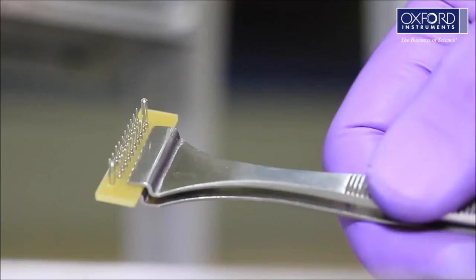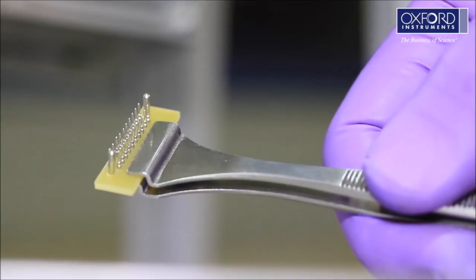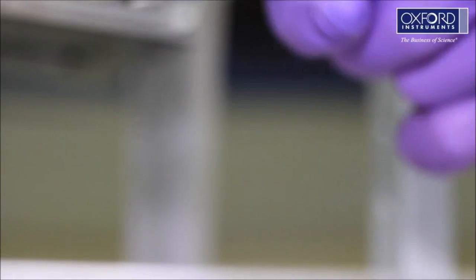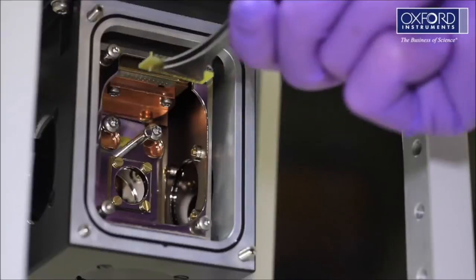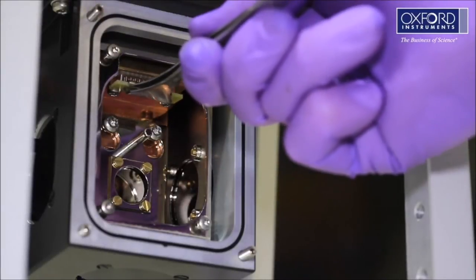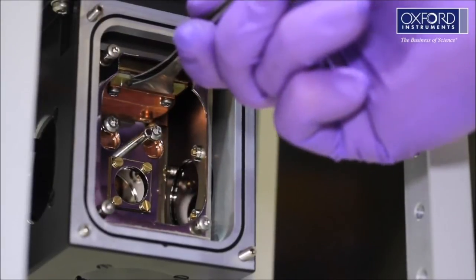If you have chosen this, you will be supplied this mating connector. Make the electrical connections between your sample and this connector. Then insert it into the mating connector near the sample position.